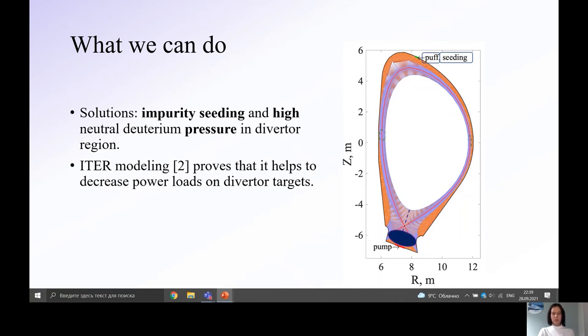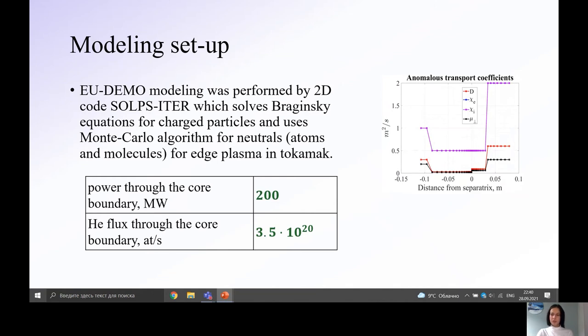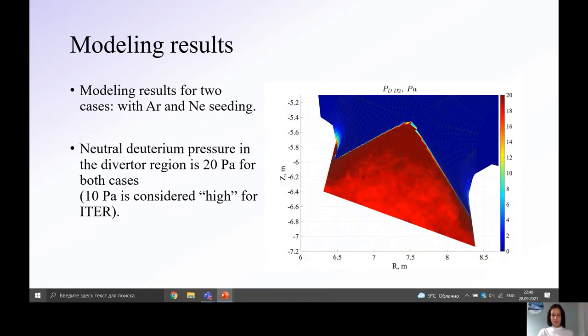If we want DEMO to operate in a long pulse or even a steady state regime, we must have power flux density on divertor targets lower than 5 MW per square meter and electron temperature on those targets must be lower than 5 eV to prevent tungsten evaporation. The solution for this problem is impurity seeding and high neutral deuterium pressure in divertor region. ITER modeling proves that it helps to decrease power loss on divertor targets.